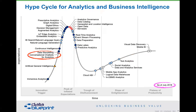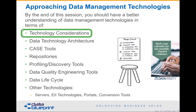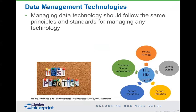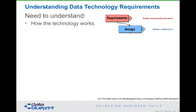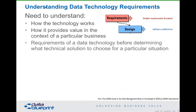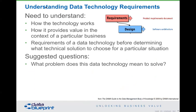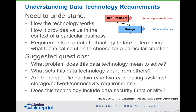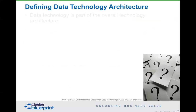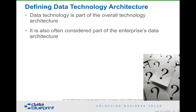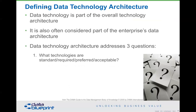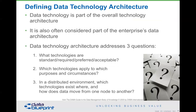Data storytelling is becoming important, as are chatbots. Prescriptive analytics is about to go over the top of the hype curve. A data technology architecture is the idea that you need to understand how technology works and what value it will supply in the context of your business requirements. You can ask vendors: What problem does this technology mean to solve? What sets it apart? Are there specific requirements needed to run it? Does it include security functionality? It addresses what technologies are standard, required, preferable, and acceptable — and in a distributed environment, where should everything reside.